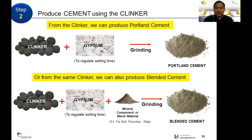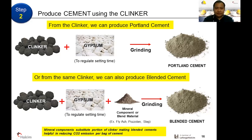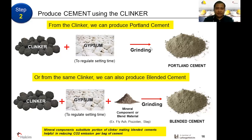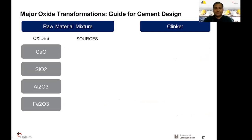To make blended cement, we use clinker plus gypsum plus mineral components. We can add fly ash, pozzolan, and slag. These are added mostly during grinding to produce our blended cement. By substituting a portion of the clinker with mineral components, we are also able to reduce CO2 emissions per bag of cement. Every time we make clinker, we emit carbon dioxide, so reducing clinker content is better for preserving our environment.